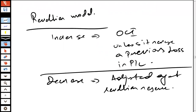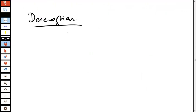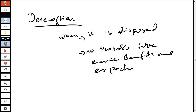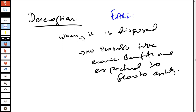There is also de-recognition under IAS 16. Property, plant and equipment is to be de-recognized when it is disposed of or when no probable future economic benefits are expected to flow to the entity. Whichever occurs, the asset should be de-recognized at that point. That was a short summary of IAS 16 property, plant and equipment.